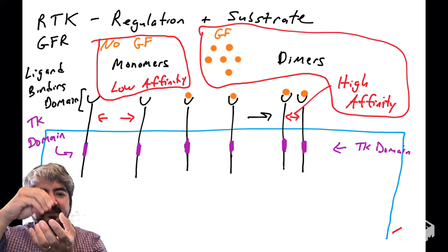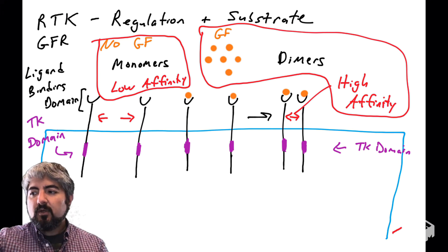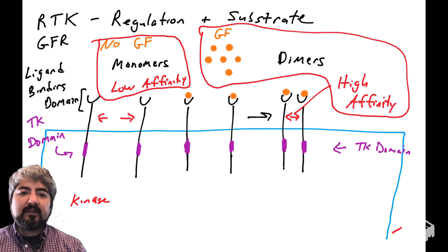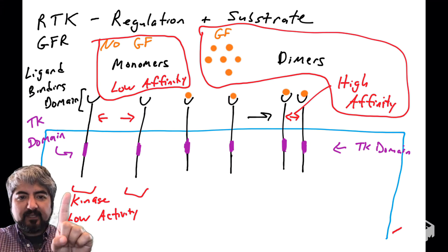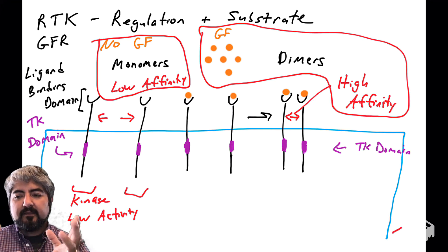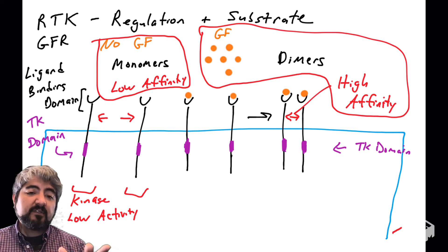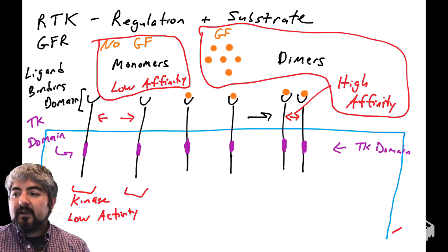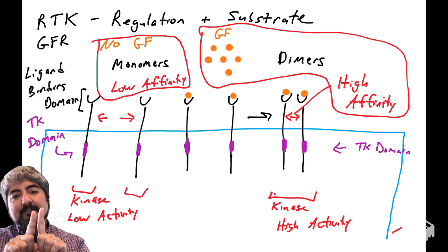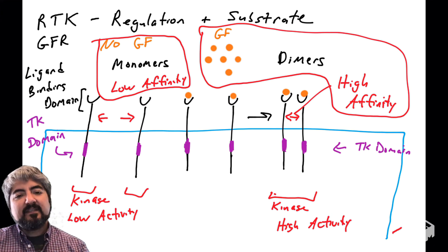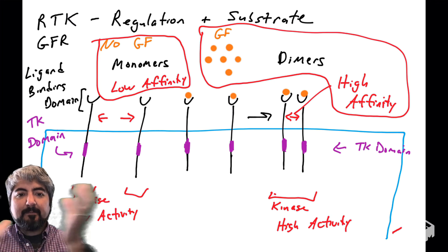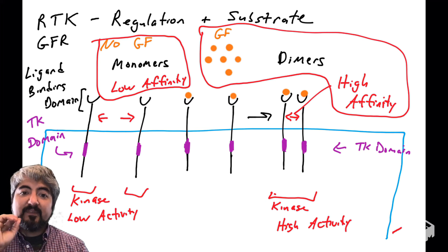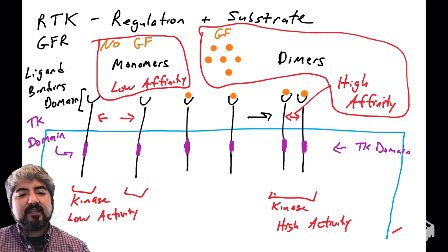This receptor is also a kinase, and the growth factor binding and dimerization also trigger a change to the kinase activity. There's the tyrosine kinase domain of these growth factor receptors. When these receptors are in their monomeric form, they are in a 3D conformation that gives them very low kinase activity — if they encountered their substrate they probably wouldn't phosphorylate it. Whereas when the dimers form, dimerization plays a role in activating — increasing — the activity of the kinase.